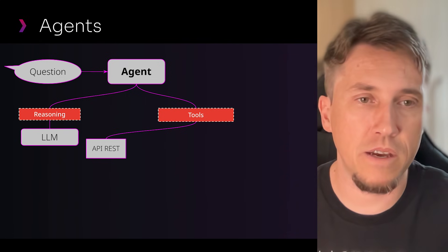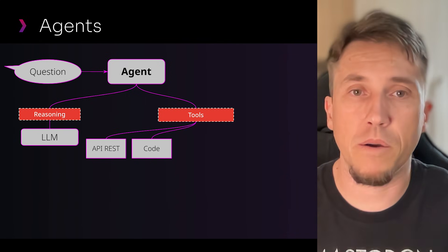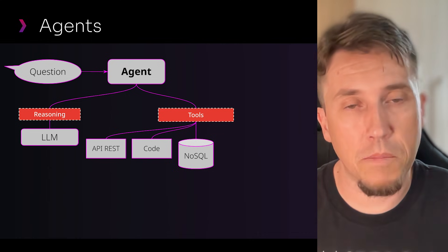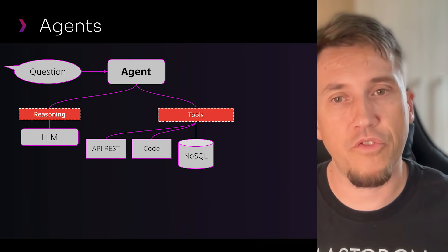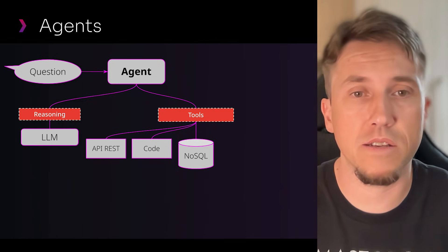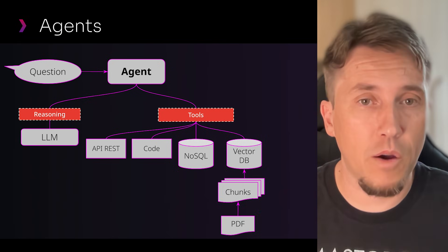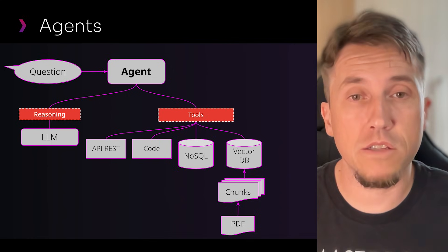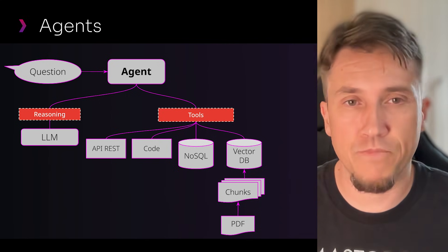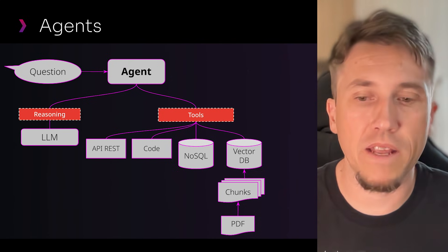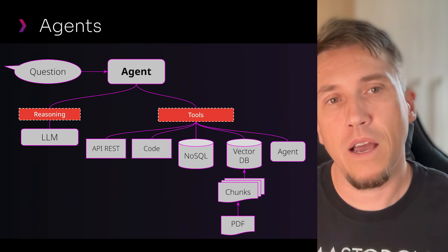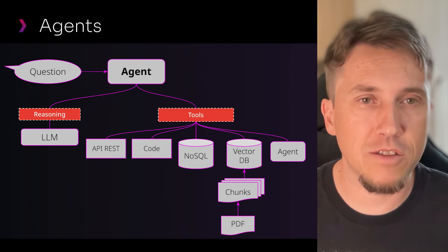Tools can be a REST API call, code that we need to run, or a query on a NoSQL database — which is the case we're exploring today, when we need to feed the LLM with transactional data from the customer. You can also have a RAG knowledge base as a tool for the agent, so the agent can answer questions about knowledge that only your company has. We can even have an agent as a tool to another agent, creating a multi-agent setup.